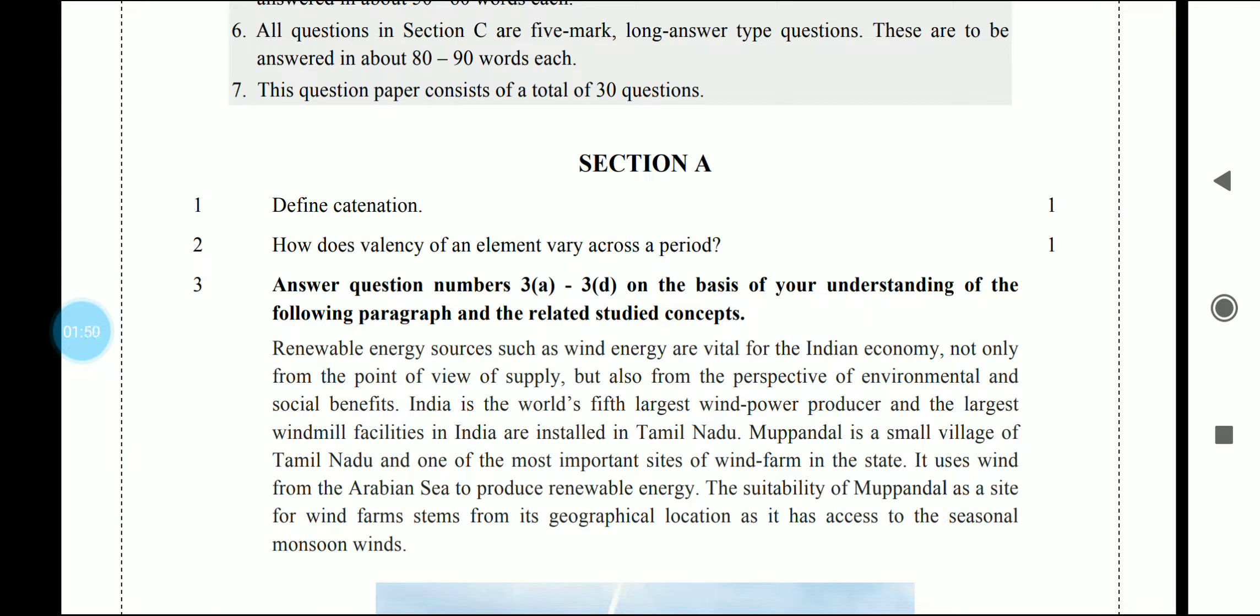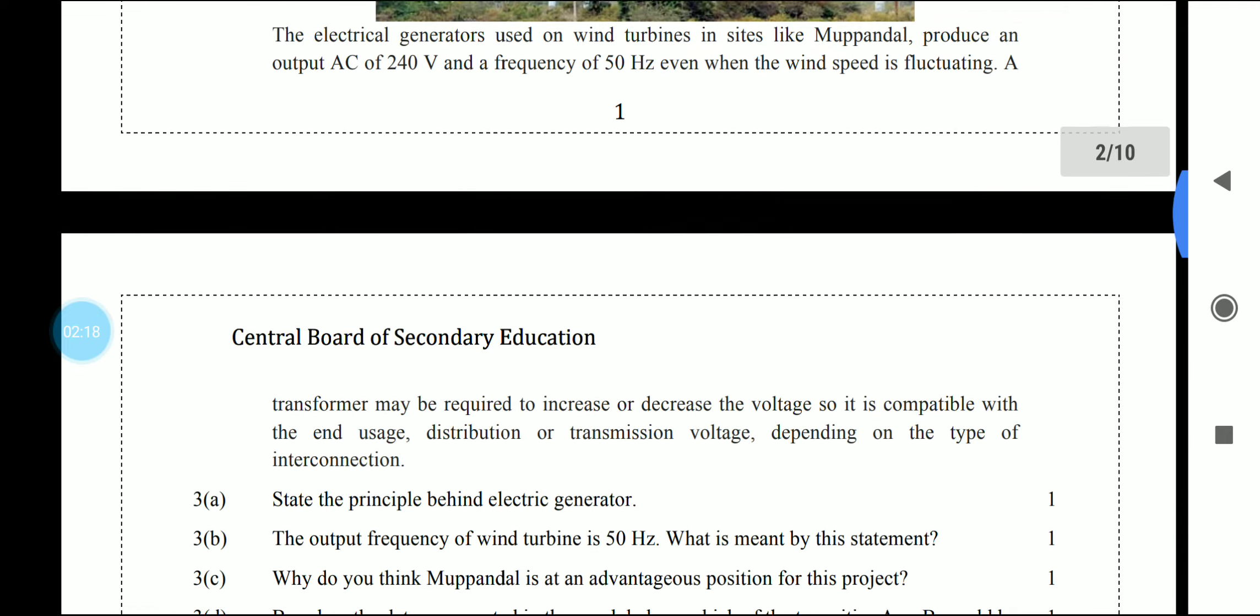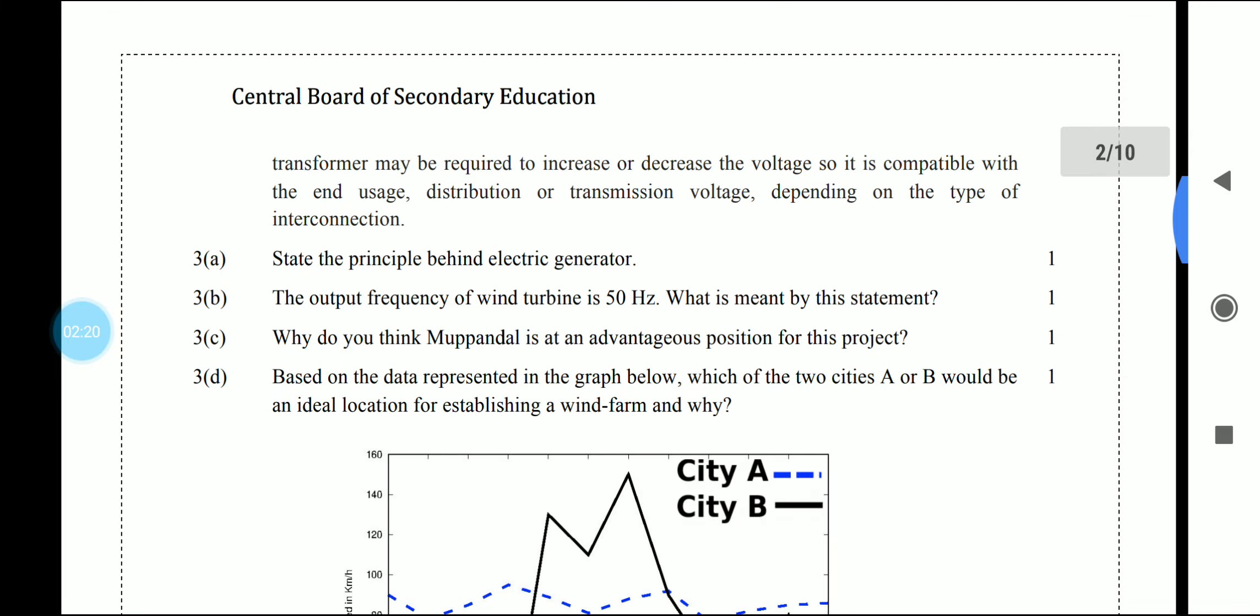First, you can be asked a simple definition of catenation which you can define in one sentence. Then, how does valency of an element vary across a period? This is a good question that you can answer in one sentence.